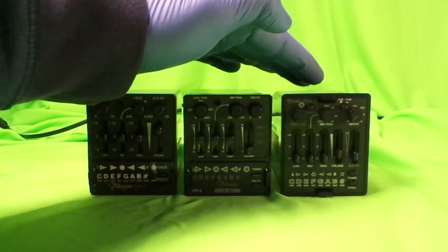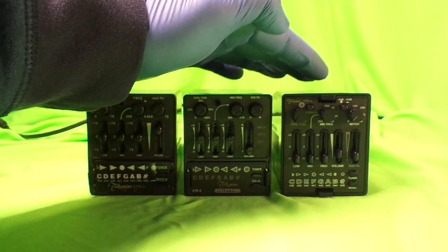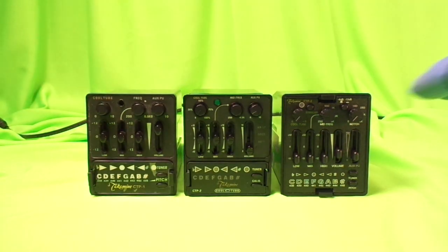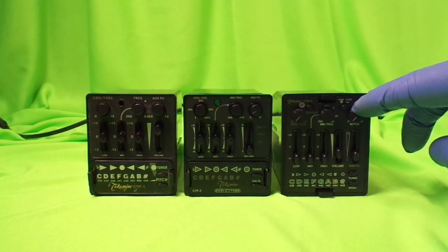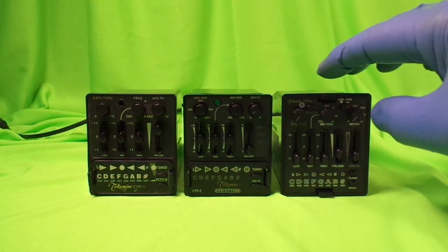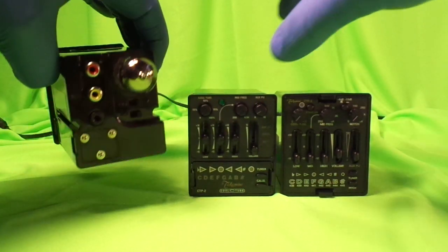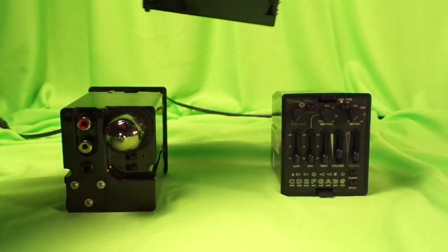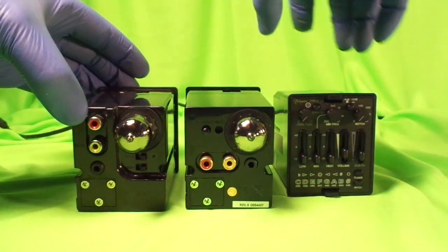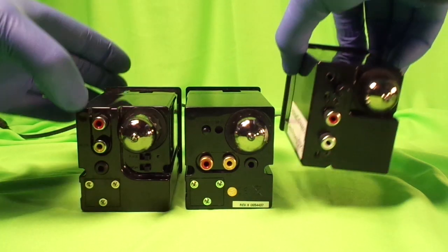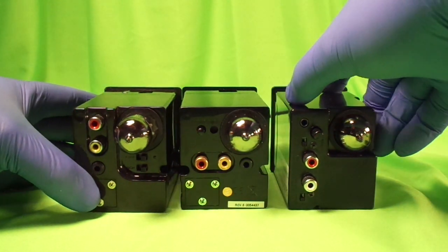Currently, the CTP3 is the most well appointed preamp, has the addition of a parametric EQ on it, which the CTP1 and CTP2 did not have. Now these are fairly easy to identify from the back if you know what to look for. Here's how you do it.